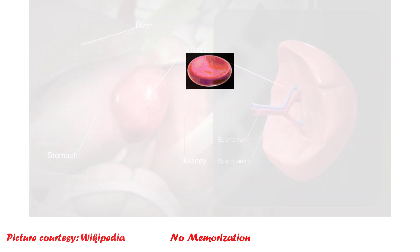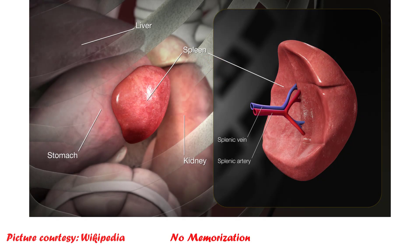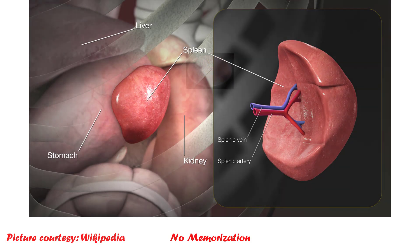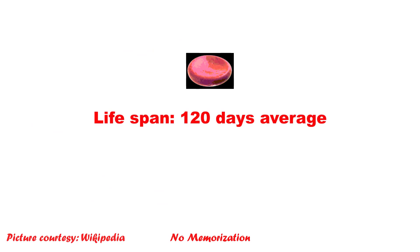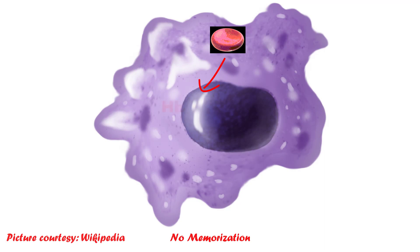Bilirubin metabolism starts with the breakdown of RBCs. It happens in the reticuloendothelial system, particularly in the spleen. RBCs have a lifespan of an average of 120 days. Macrophages pick those RBCs and break them down into hemoglobin and protein. Protein will further break down into amino acids and will be used by the body.